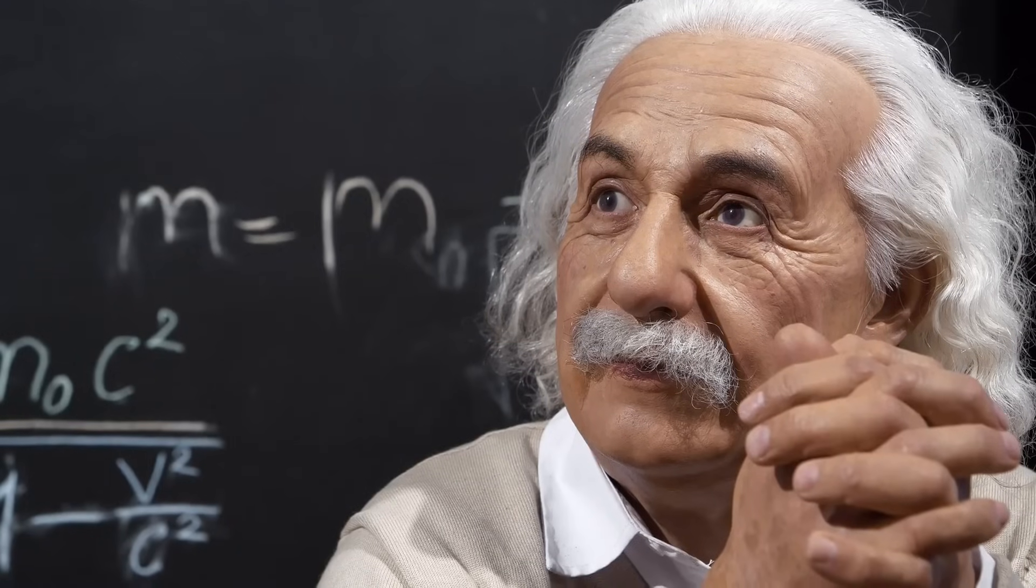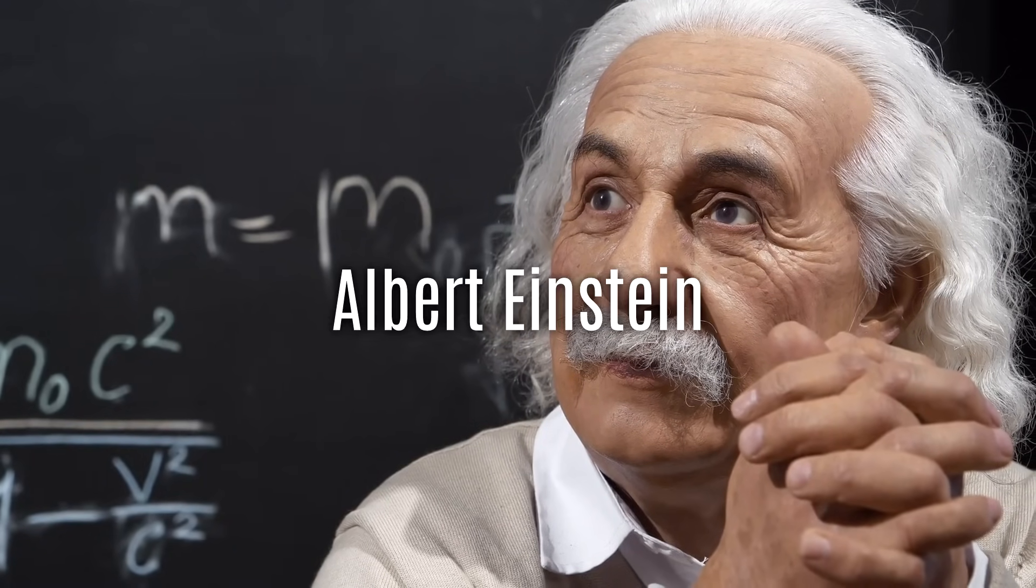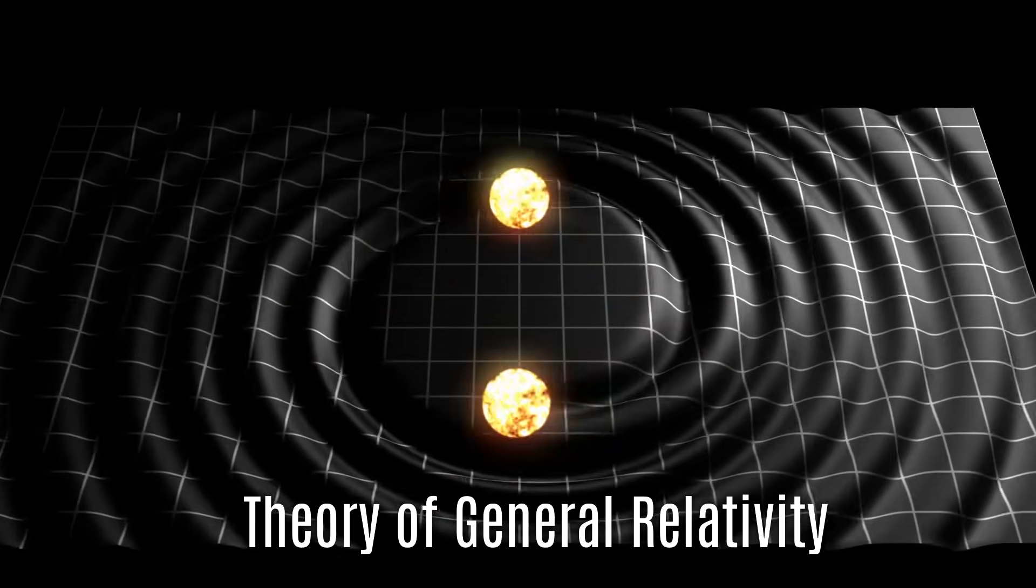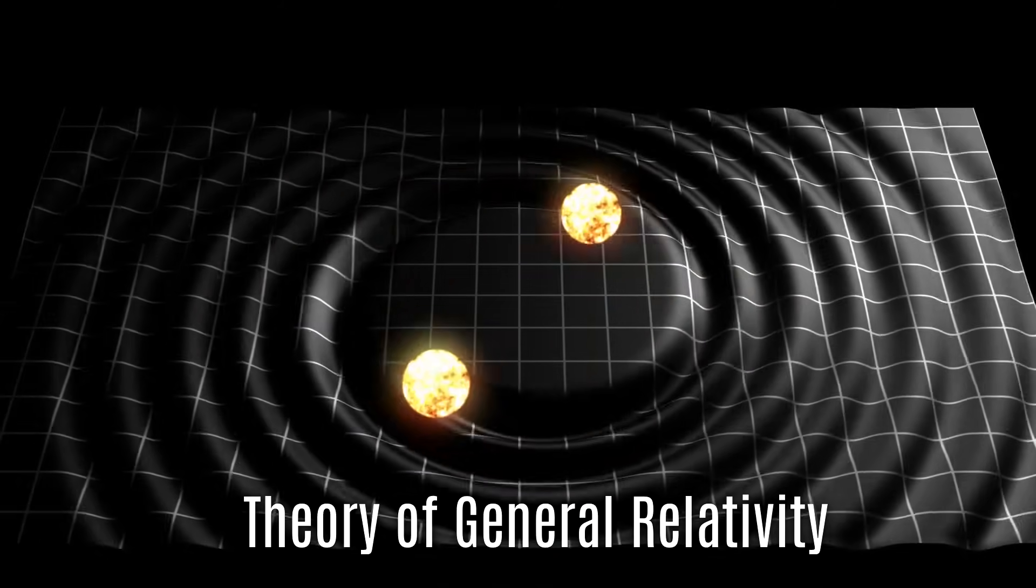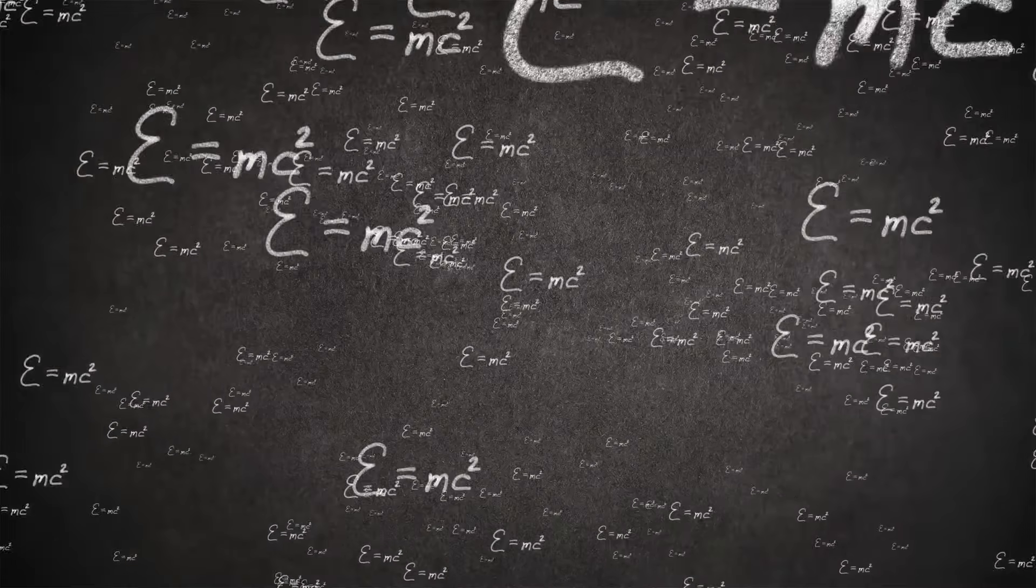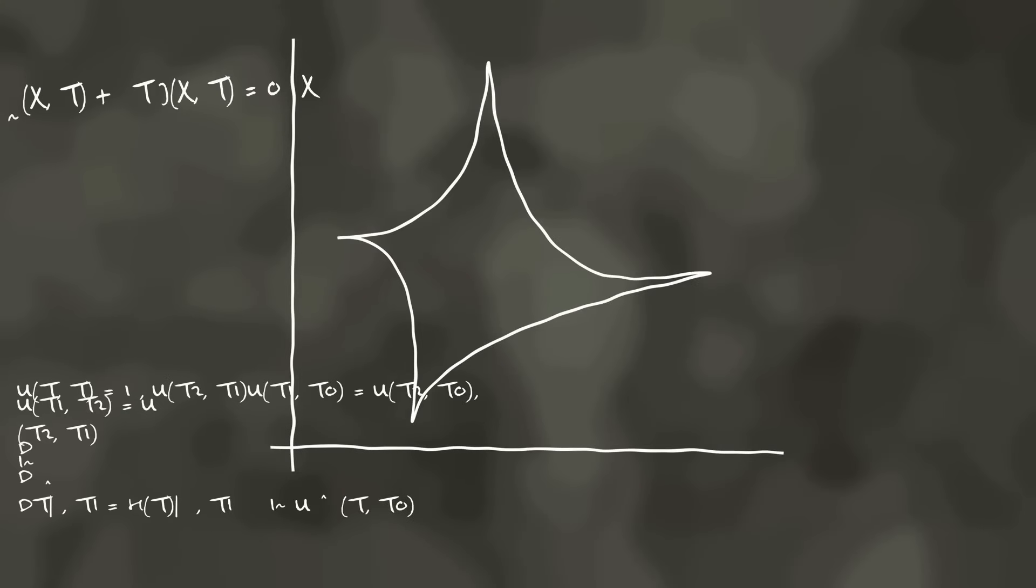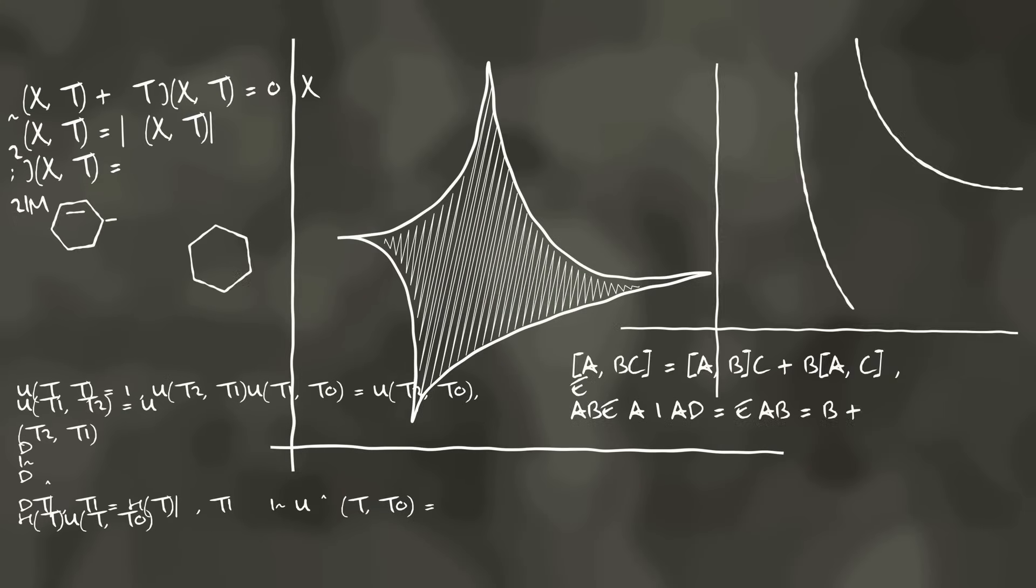The idea of black holes was first hinted at by Albert Einstein in 1916, a consequence of his groundbreaking theory of general relativity. For decades, they remained purely theoretical, until the 20th century, when advancements in technology allowed scientists to detect them indirectly.